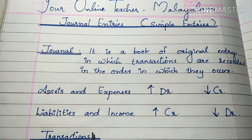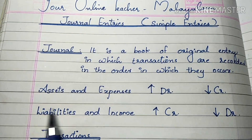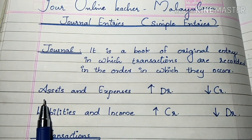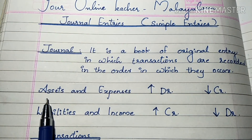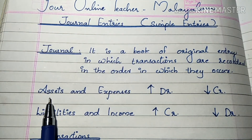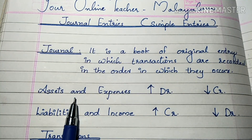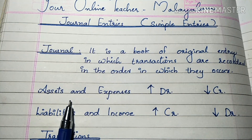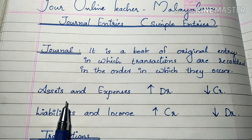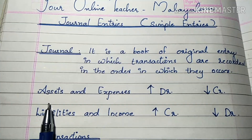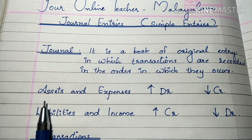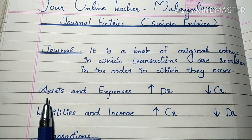What is an asset? Examples of assets include: land and building, machinery, debtors, cash, bank, bills receivable. These are all assets.